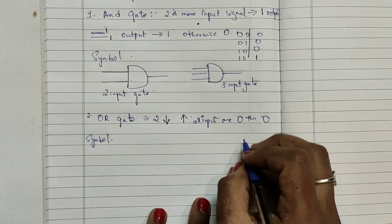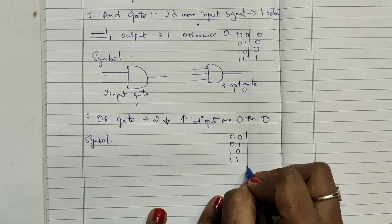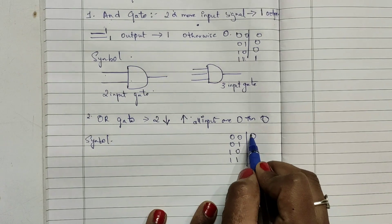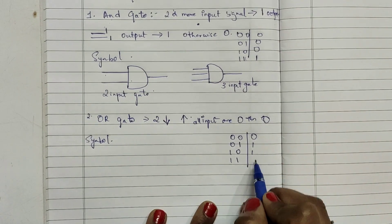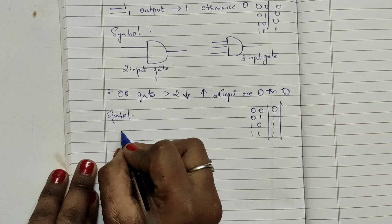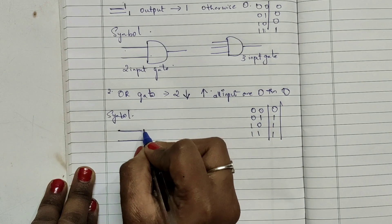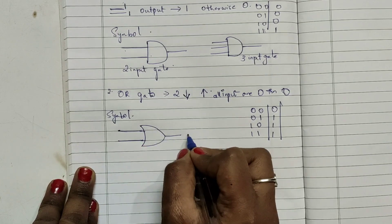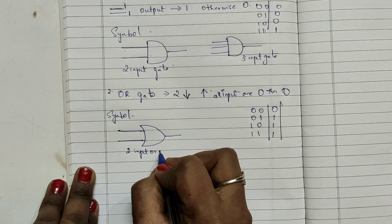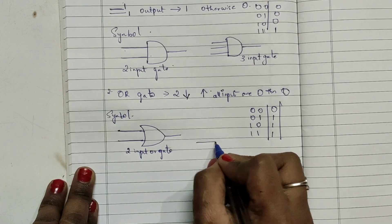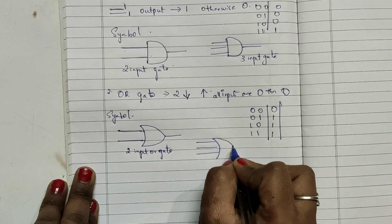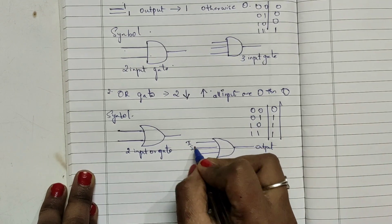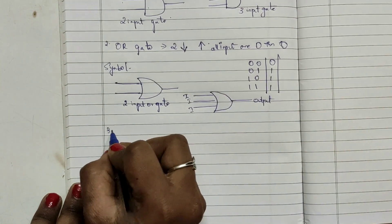Let's look at a short truth table for OR gate: 0·0, 0·1, 1·0, 1·1. If all inputs are 0, the output is 0. If any input satisfies one condition, the output is 1. The symbol of OR gate has two inputs and one output. For a three-input OR gate, it has three input signals with the OR symbol and one output.